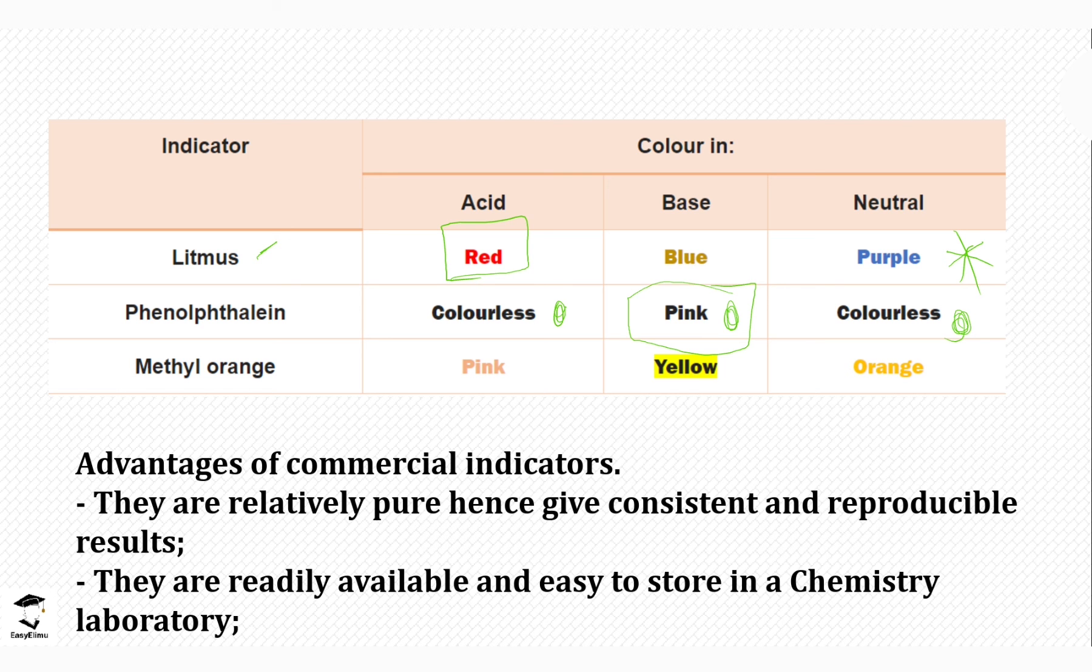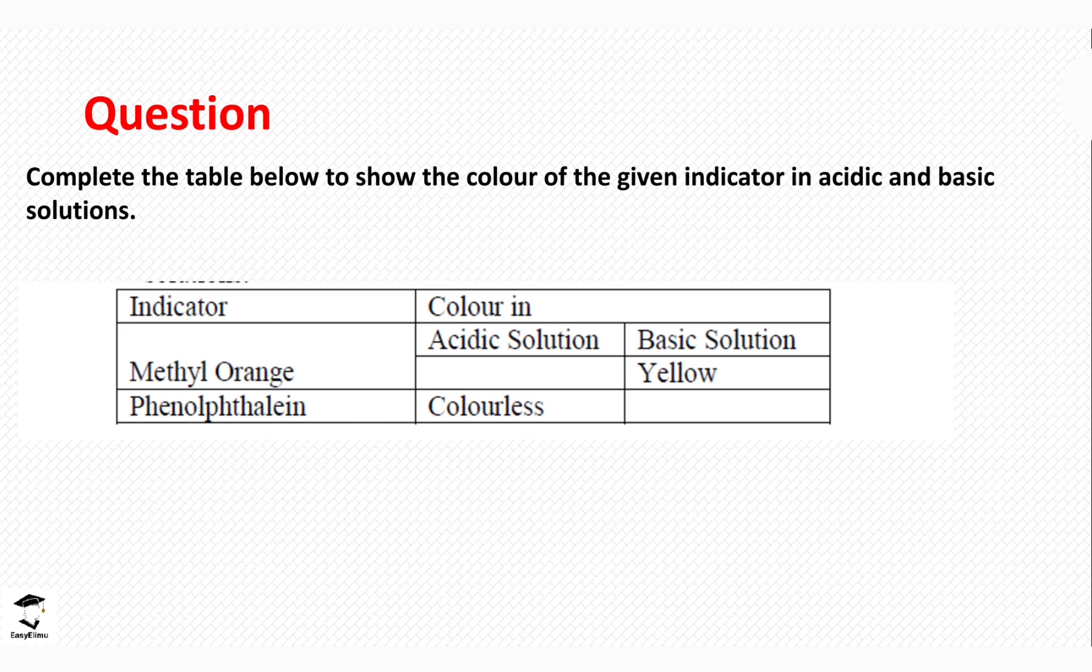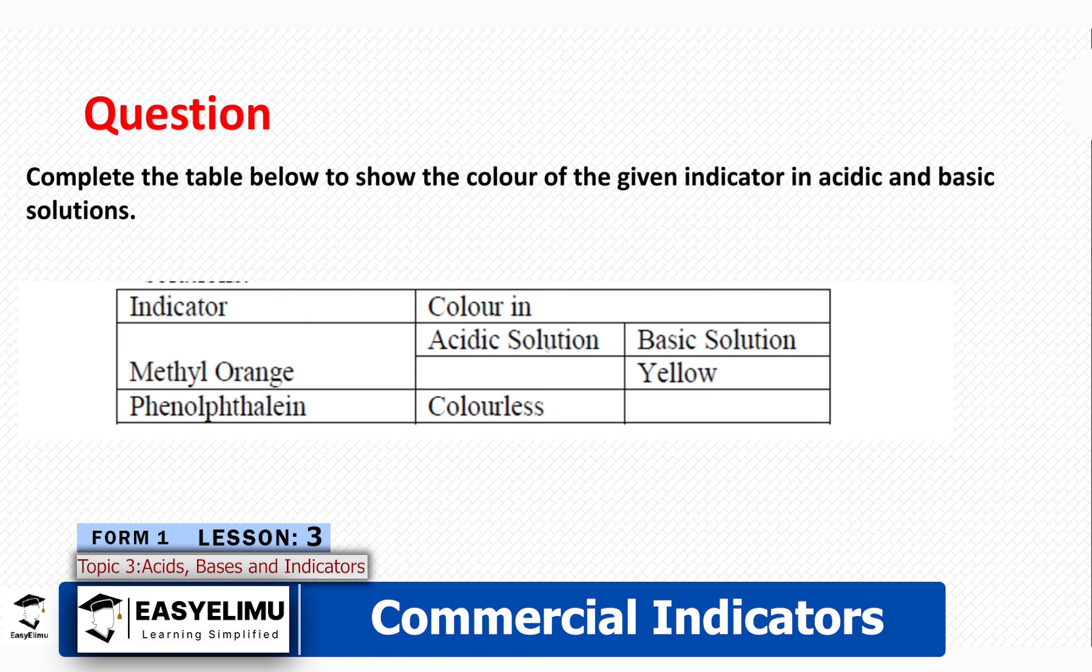Let's look at one question: Complete the table below to show the color for the given indicator in acidic and basic solutions. We have the indicator methyl orange and phenolphthalein, with color in acid solution and basic solution. There's a blank with methyl orange and a blank with phenolphthalein. Methyl orange turns pink in acid.